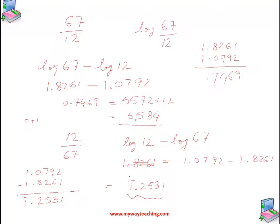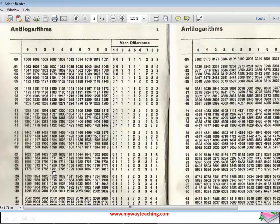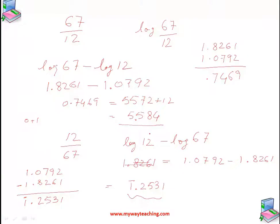We now look up the anti-log table for 0.2531. From row 0.25 and column 3, the value is 1791, and the mean difference for 1 is 0, so the anti-log value is 1791. The characteristic is minus 1, so minus 1 plus 1 equals 0. The decimal is placed so there are zero digits before it, giving 0.1791.